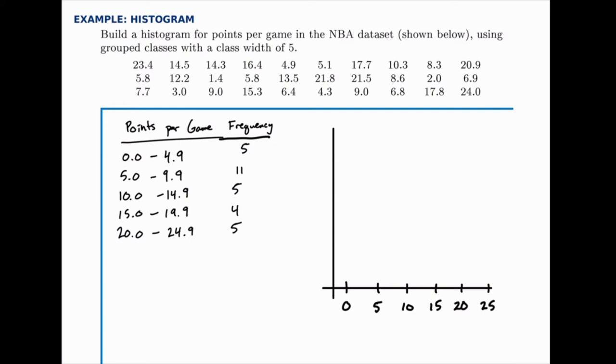Then on the vertical axis we have the frequency. So here we have the points, here we have the frequency, and the highest frequency we see is 11, so we need to at least go up to 11. So let's have 10 here and 5.